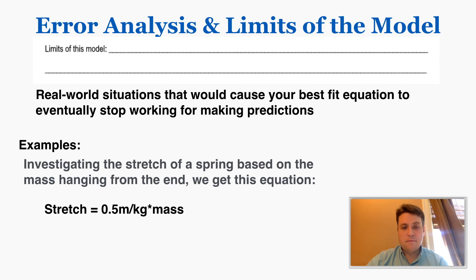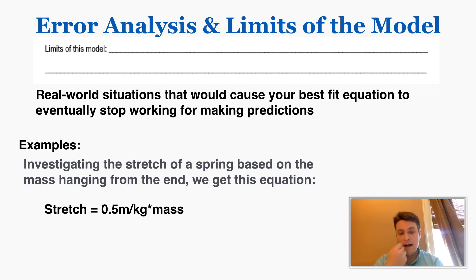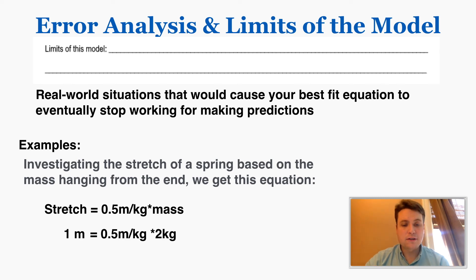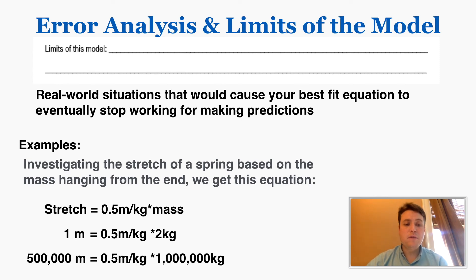The last thing to know about is the limits of the model. A limit of a model is a real-world situation that would cause your best fit equation to eventually stop working for making predictions. The best fit equation predicts that a phenomenon will behave the same mathematical way no matter how big or small your independent and dependent variables are, but we know this isn't true in the real world. For example, investigating the stretch of a spring based on the hanging mass, we could get: stretch equals 0.5 meters per kilogram times mass. This works for small numbers like 2 kg — the spring stretches 1 meter. But if you put in a million kilograms, it predicts 500,000 meters (about 250 miles), which is wrong. Somewhere before that, the spring will deform or break.